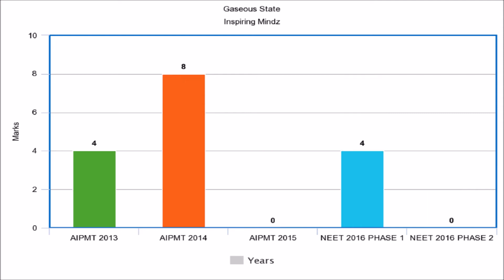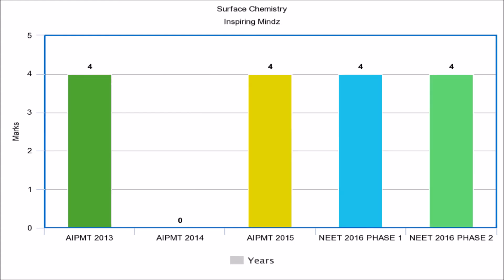For gaseous state, in AIPMD 2013, 4 marks of questions were asked, which increased to 8 marks in AIPMD 2014. In AIPMD 2015 and NEET 2016 Phase 2, no questions were asked, while in NEET 2016 Phase 1, 4 marks of questions were asked.